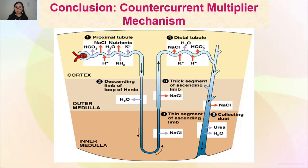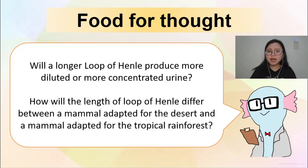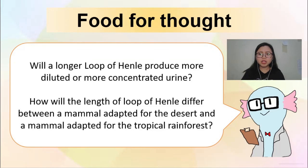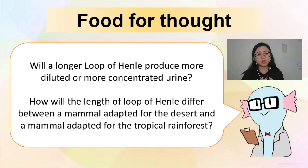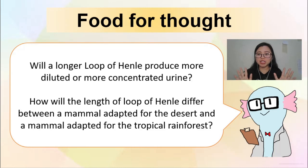Some food for thought — try to think creatively: will a longer loop of Henle produce more diluted or more concentrated urine in the organism? Second question: how will the length of the loop of Henle differ between a mammal adapted to the desert and a mammal adapted to the tropical rainforest? What difference of loop of Henle would you expect in two mammals in such different habitats? This is your KBKK HOTS question to think about.